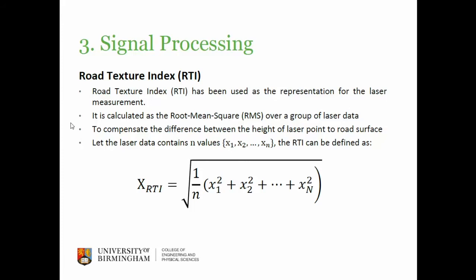Now I'll show how we calculate the road texture index. We calculate the root mean square of the data over a certain area. Because the road is not completely flat but slightly curved, the middle of the sensor array will be closer to the road surface while the sensors on the two sides will be farther away. We use the road texture index so our calculation is not affected by this height variation.